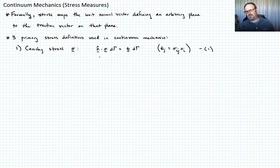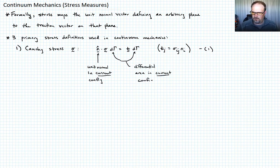So what should we note about this equation? The first is that n is the unit normal in the current configuration. And then we can look at these d gamma terms. Those are the differential areas in the current configuration.